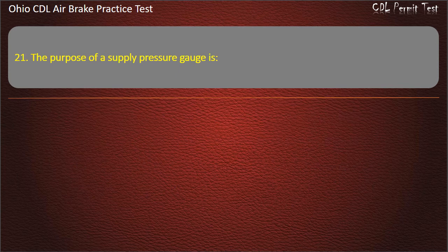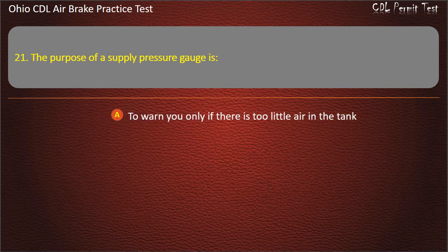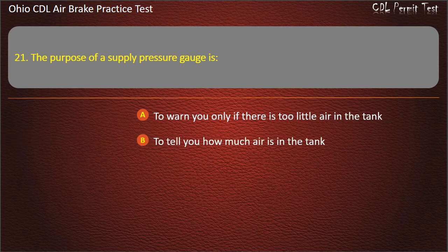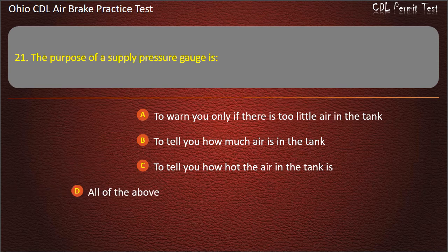Question 21: The purpose of an air pressure gauge is: to warn you only if there is too little air in the tank; to tell you how much air is in the tank; to tell you how hot the air in the tank is; all of the above. Answer: To tell you how much air is in the tank.